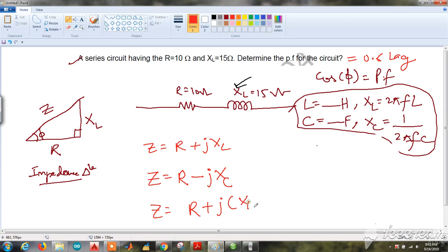If both were given, take R + j(XL - XC). This is because ideal inductor voltage leads the current by +90 degrees, and capacitor by -90 degrees. That's why it is minus here and plus here. If both were given, take XL minus XC.